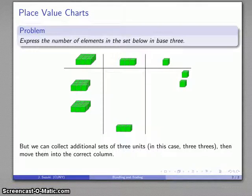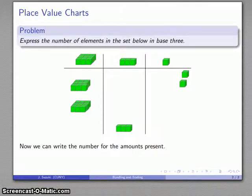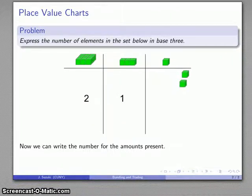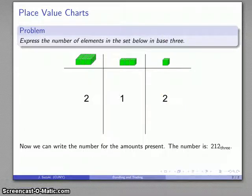Now I want to write this as a number expressed in base three. There's two of these, there's one of these, and there's two of these. I can write the numbers for the amounts present—that's going to be two, one, two. My final expression of the number is going to be 212 with a subscript indicating that I'm working in base three. That's my final expression: 212 base three.